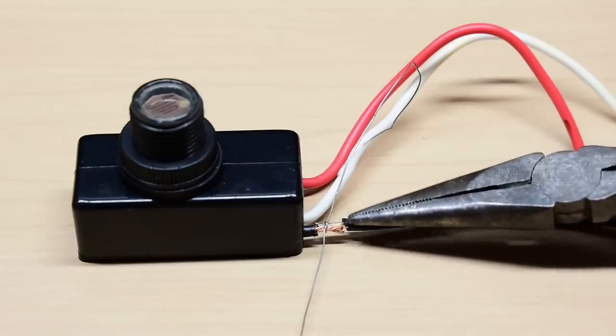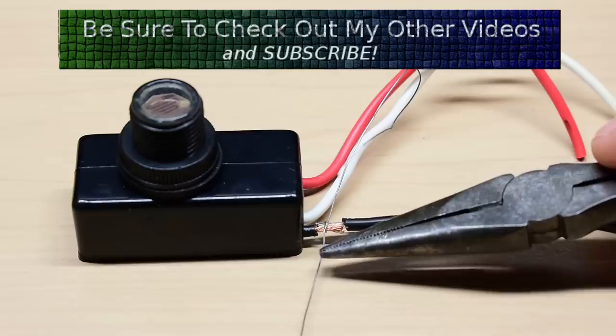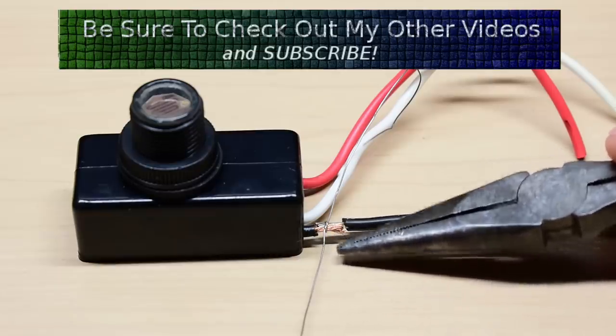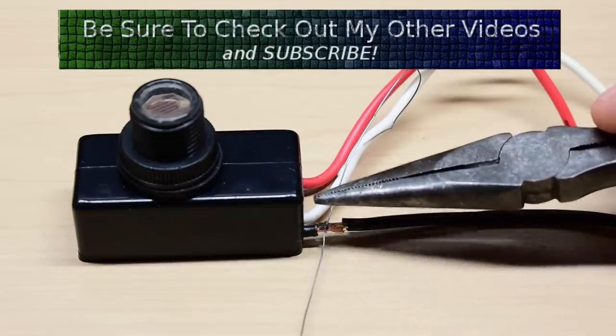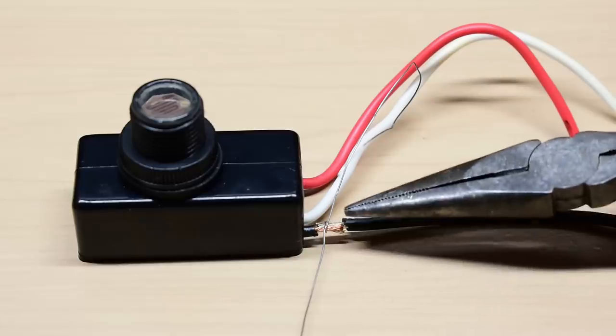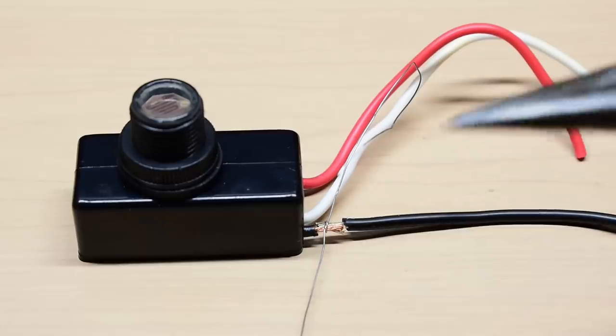This wire here is going to be turned the opposite direction, going under from this side, and over to here, I'm going to wrap three tight turns here, squeezing the two wires together very tightly. Let me do that, and I'll come right back.